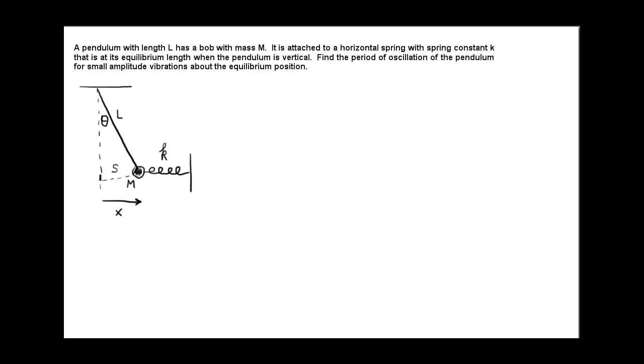We want to find the period of oscillation of this pendulum connected to the spring for small amplitude vibrations. I've drawn a picture that shows the pendulum bob displaced a little bit from its equilibrium position and the spring therefore compressed by a distance x. We need to write down Newton's second law for the motion of the pendulum bob along its direction of motion and from that we'll be able to extract an expression for the frequency and therefore for the period.